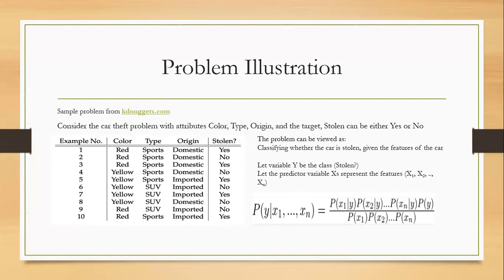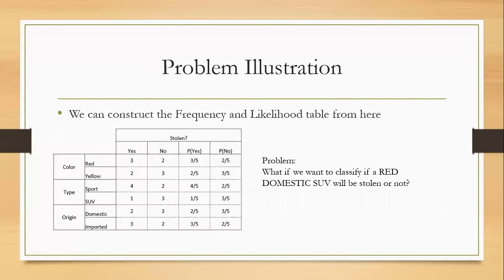Looking at the data here, we can move to the frequency table and the likelihood. We have the attributes here. For color, we have red and yellow. For type, we have sport and SUV. And for origin, we have domestic and imported.